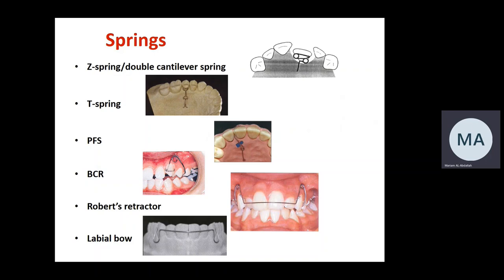The main active components are: Z-spring, double cantilever, T-spring, palatal finger spring, buccal canine retractor, Roberts retractor, and labial bow. For each, you need to know the name, indications, wire thickness, and any special design features.